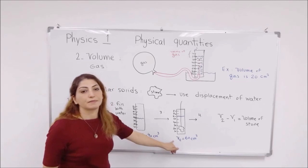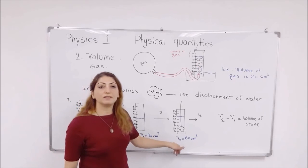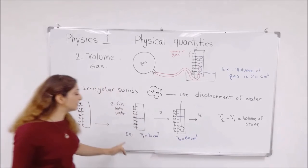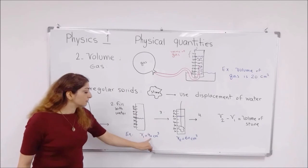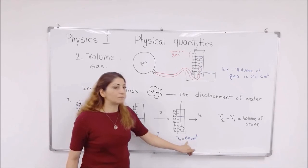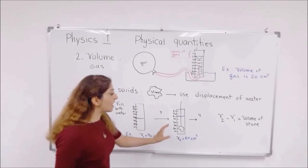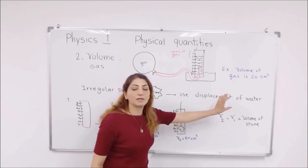For example, here, the second reading of the volume would be 60 centimeter cube, so we have an increase in the volume. From 40, it has become 60. Now, how do you find the volume of the stone?